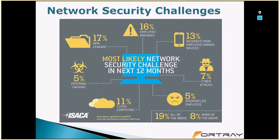Data leakage can happen when an employee copies information from an internal machine and takes it home. For example, in banks or financial institutions, plugging in a USB won't work and external email may be blocked. Employee mistakes can also cause data leaks — mistakenly sharing or leaking information internally.